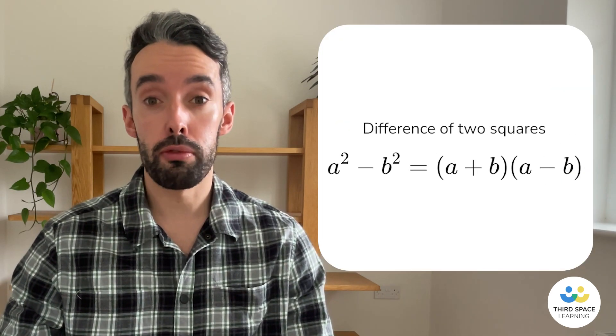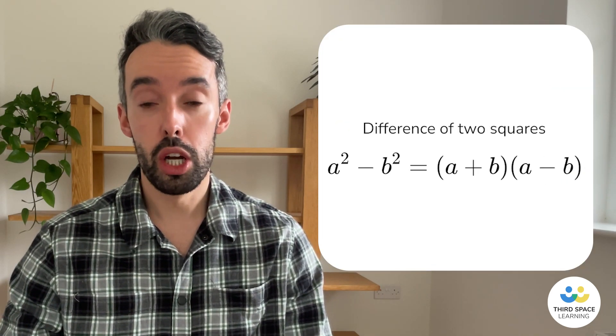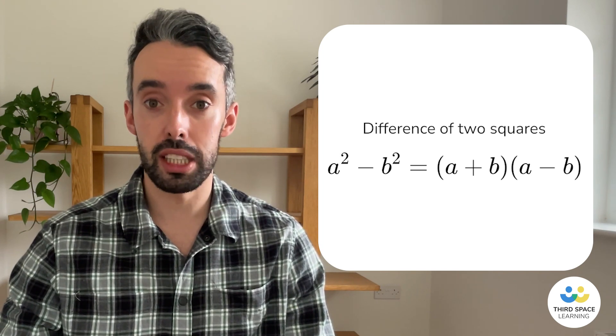The difference of two squares is a way of factorizing a quadratic expression when we have two squared terms that are subtracted from each other.